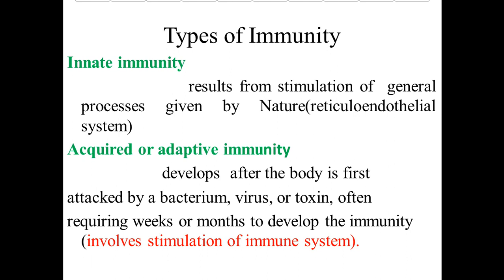Innate immunity results from stimulation of general processes given by nature, and there is an important role of the reticuloendothelial system. Acquired or adaptive immunity develops after the body is first attacked by a bacterium, virus, or toxin, often requiring weeks or months to develop, and involves stimulation of the immune system.